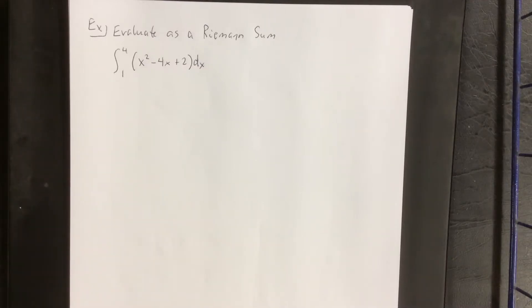I'd like to do another example setting up a Riemann sum. For this one we're going to do the definite integral from 1 to 4 of x squared minus 4x plus 2 dx.